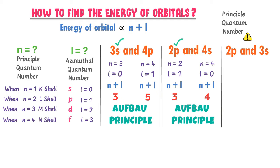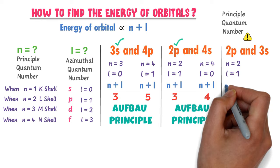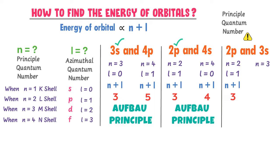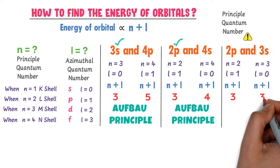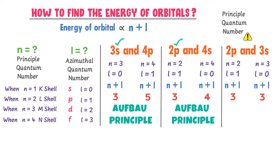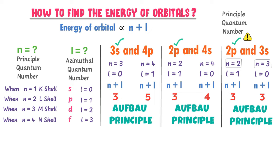One last special case is 2p and 3s. In case of 2p, n equals 2 and for p, l equals 1, so n plus l equals 3. In case of 3s, n equals 3 and for s, l equals 0, so n plus l also equals 3. Again, we get the same n plus l value for both orbitals. Can you guess which orbital has less energy? The principal quantum number of 2p is 2 and that of 3s is 3. So, 2p has lower energy than 3s. Therefore, according to the Aufbau principle, electrons will first fill the 2p orbital.